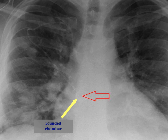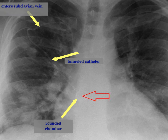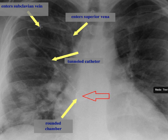A chamber on an X-ray is a port through which you can administer chemotherapy just through the skin into a port which is tunneled just under the skin and connects to a catheter, which itself is also tunneled under the skin to reach the entry point into the main veins — central veins — first by entering the subclavian vein and then continuing to enter the superior vena cava.